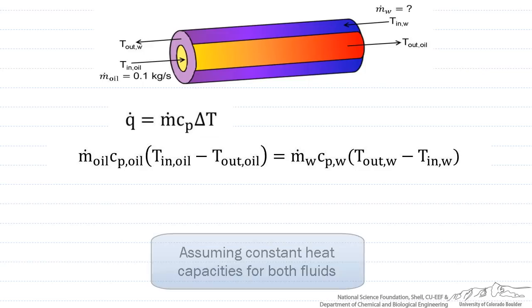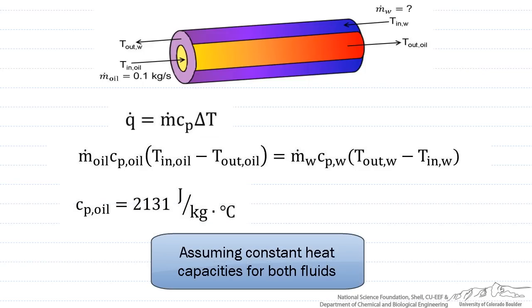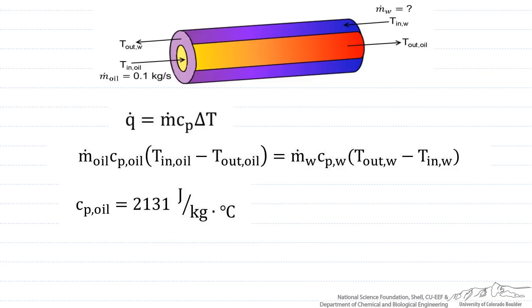The heat capacities are values that can be looked up, and in this case the heat capacity of the oil is 2,131 joules per kilogram degrees Celsius, and the heat capacity of the water is equal to 4,178 joules per kilogram degree Celsius.